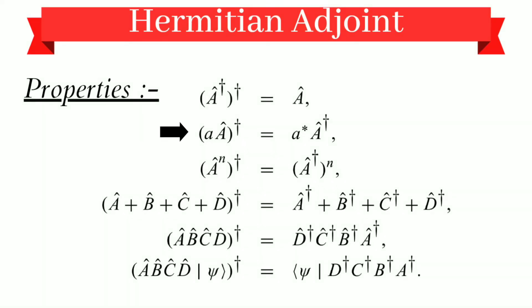Now, if we apply an operator on a complex number and then take its adjoint, like lowercase a times A cap, whole to the power dagger, then it will give us a star times A dagger, where a star is the complex conjugate and A dagger is the adjoint. And now, A to the power n, whole to the power dagger, equals A dagger to the power n. No matter whether we multiply n by dagger or dagger by n, we get the same value.